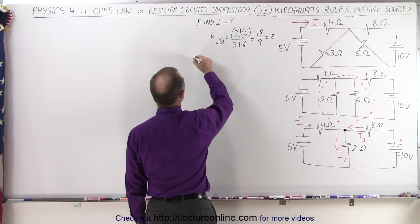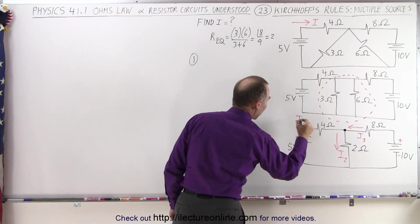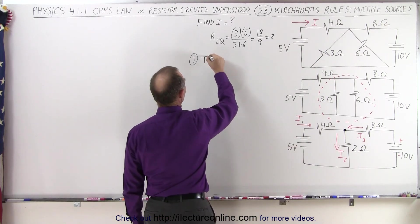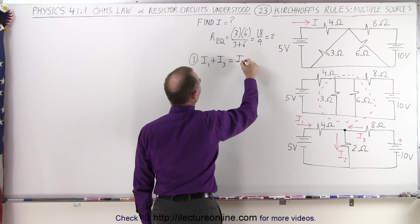then you can see that for equation number one, we end up with I1, and this should then be I1. I1 plus I3 equals I2.